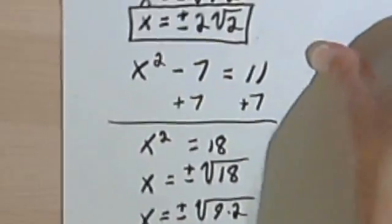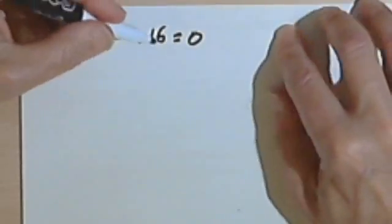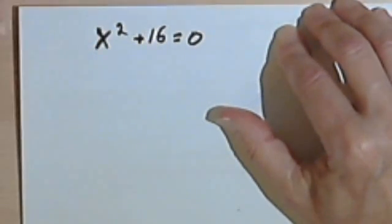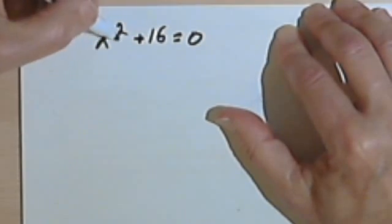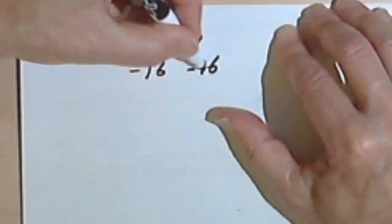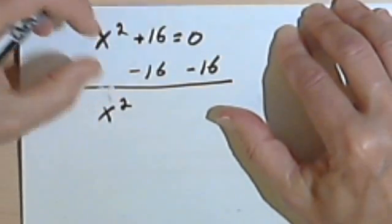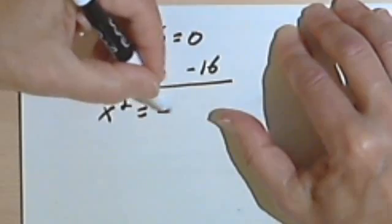There is one place I want to warn you about. So look at one more example. Here I've got x squared plus 16 equals 0. So I guess if I want to isolate the x squared, I'll subtract 16 from both sides. And now I've got x squared equals negative 16.